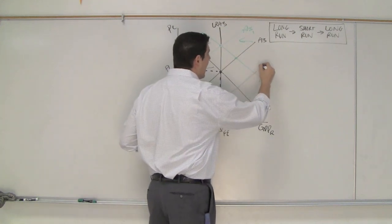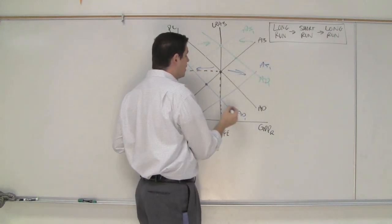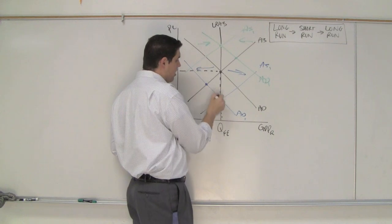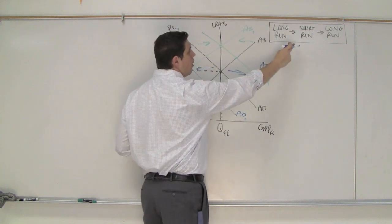And so the idea is wages are flexible and prices of resources could fall. That would cause the aggregate supply to increase. From here to here to here in the long run to short run back to long run.